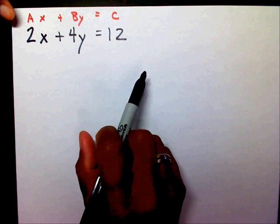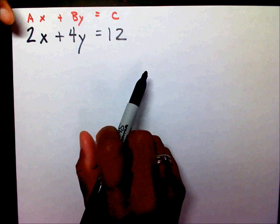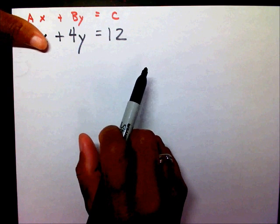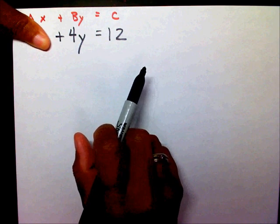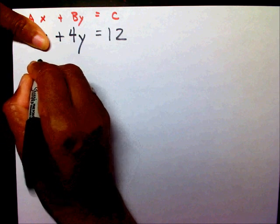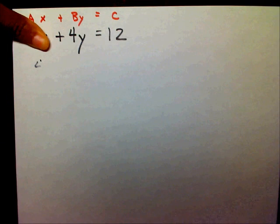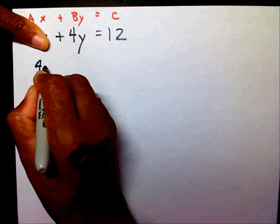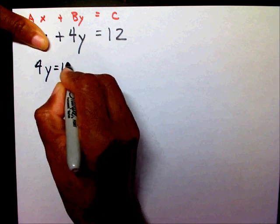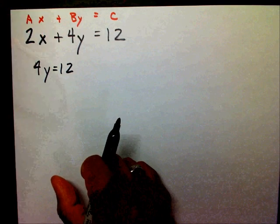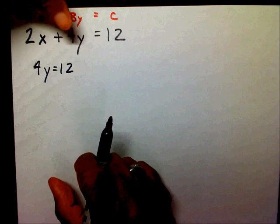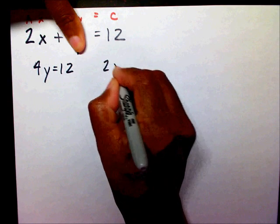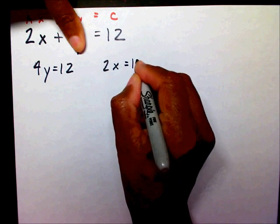I'm going to cover up one of my terms — one of my x or y terms. So I'm going to cover up my 2x. That's going to leave me with 4y equals 12. If I cover up my y term, that equation is going to be 2x equals 12.